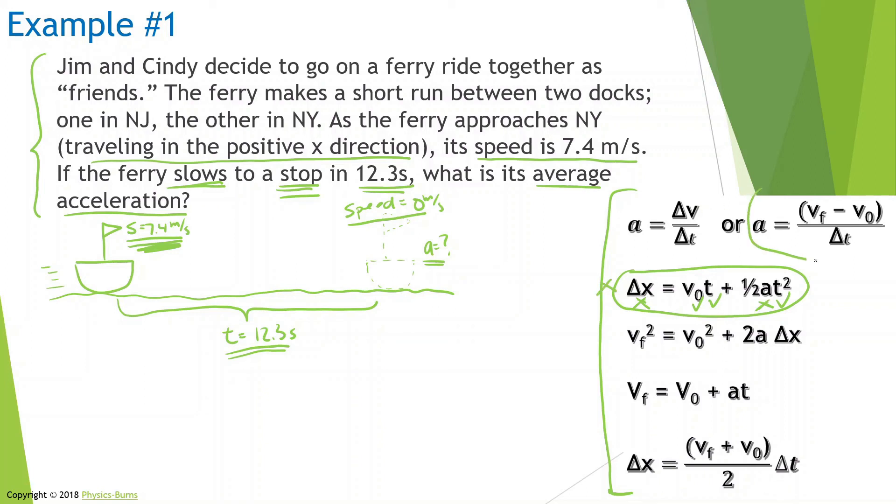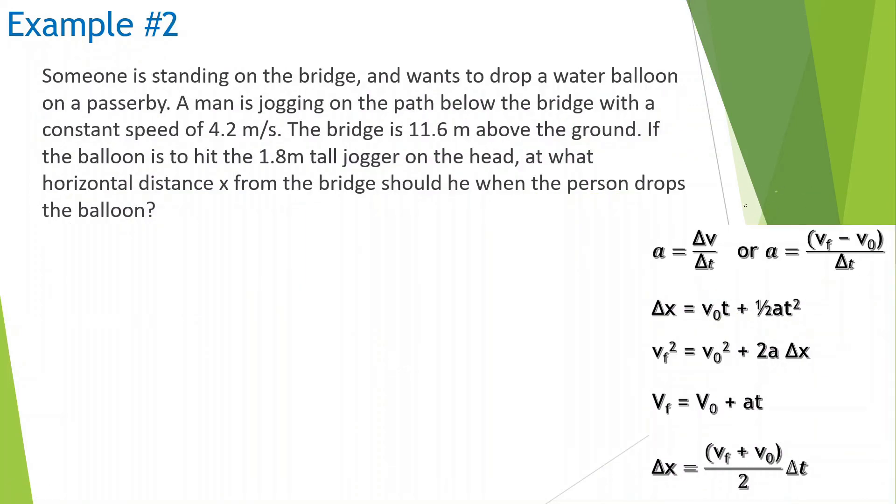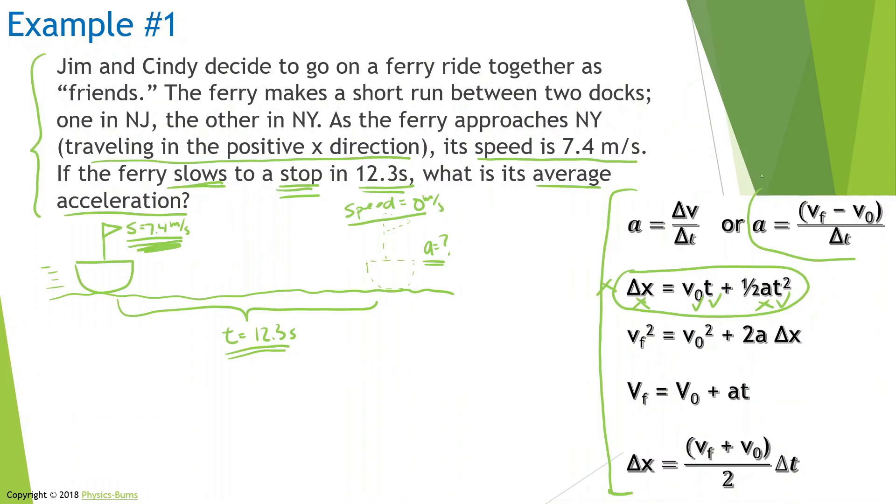Now let's look at this formula. Let's see what we know. Acceleration—we don't know what that is; that's what we're looking for. V final—we do know that; it's going to come to a stop at the end, and it's going to be zero meters per second. The initial velocity—we know that the boat at the beginning is going 7.4 meters per second. And the time—we do know the time. It's going to take 12.3 seconds for the boat to come to a stop.